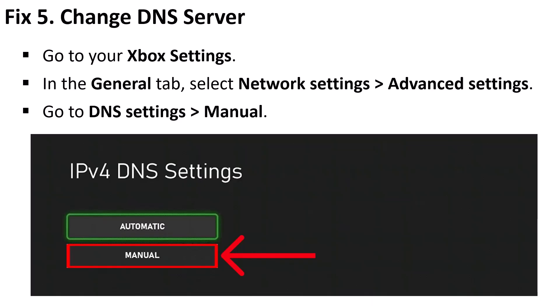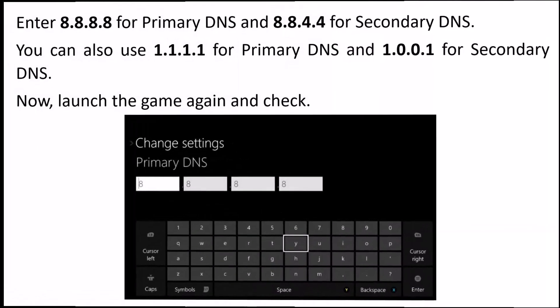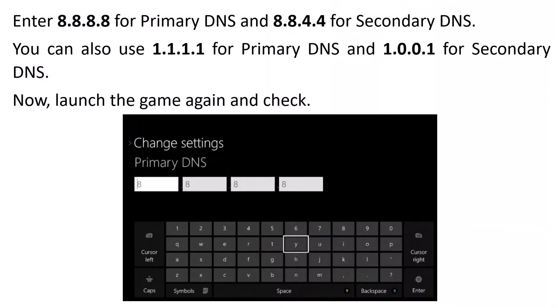Fix 5: Change DNS server. Go to Xbox Settings, in the General tab select Network Settings, then Advanced Settings. Go to DNS Settings and select Manual. Enter 8.8.8.8 in Primary DNS and enter 8.8.4.4 in Secondary DNS. Now launch the game and check if your problem is solved.